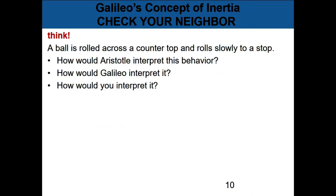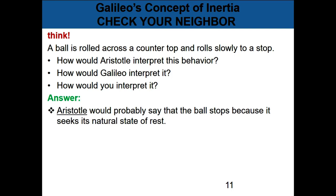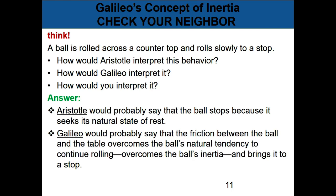Question: a ball is rolled across a countertop and rolls slowly to a stop. How would you explain this according to Aristotle? According to Aristotle, he would probably say the ball stops because it seeks its natural state of rest. However, according to Galileo, he would say that friction between the ball and the table overcomes the ball's natural tendency to continue rolling — that is, it overcomes the ball's inertia and brings it to a stop.